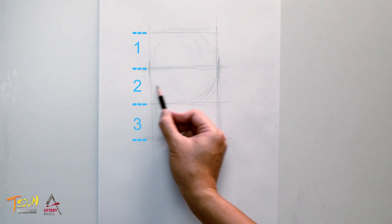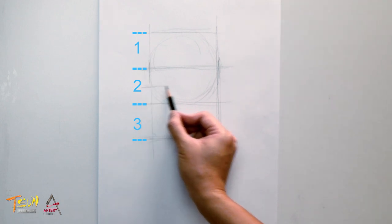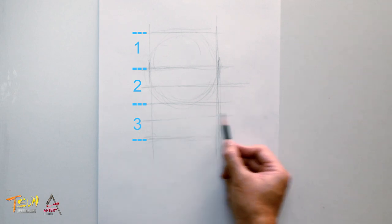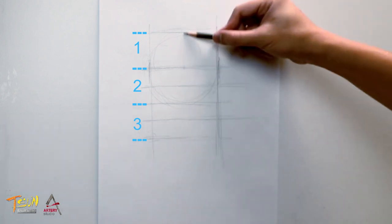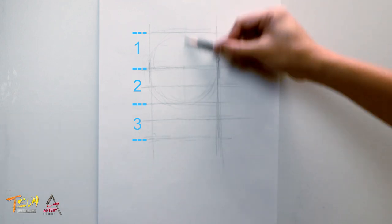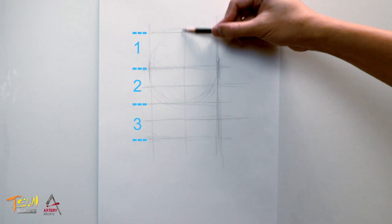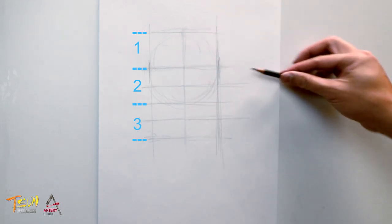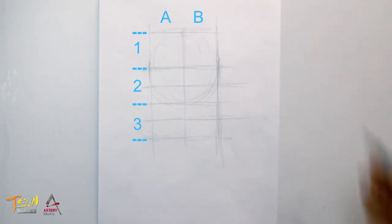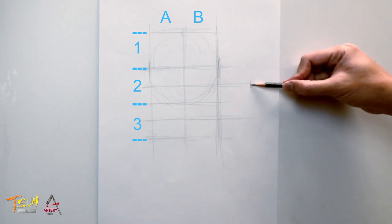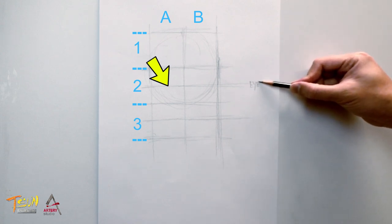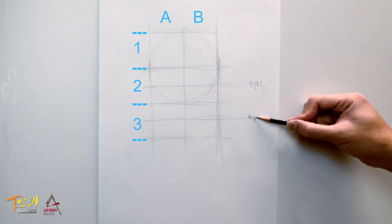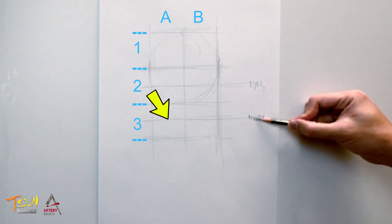Next, add a line in the middle of the second grid row, and do the same to the third grid row. Put a vertical line in the center and create two equal spacing columns, which we name A and B. The line in the middle of the second grid row is the level of eyes, and the line in the middle of the third grid row is the level of mouth.